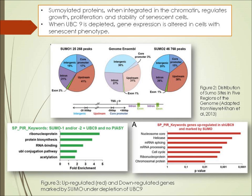SUMO-related proteins, when integrated in the chromatin, regulate growth, proliferation, and stability of senescent cells. When UBC9 is depleted, gene expression is altered in cells with a senescent phenotype. Figure 2 shows distribution of SUMO sites in five regions of the genome, adapted from Naret Khan et al., 2013. Figure 3 shows upregulated and downregulated genes marked by SUMO under depletion of UBC9, and as noted, whenever UBC9 is depleted, gene expression is altered in cells with senescent phenotype.